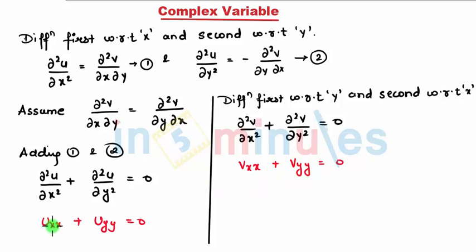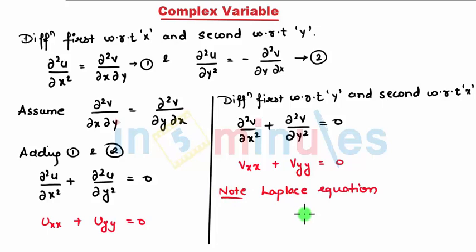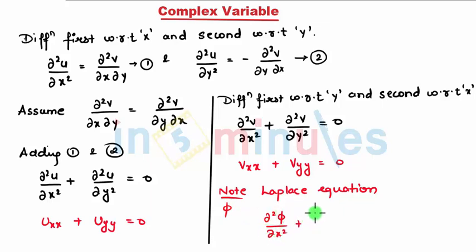Hence I get u_xx + u_yy = 0 and v_xx + v_yy = 0. Since u satisfies this, u is satisfying the Laplace equation. As a note: the Laplace equation for a function φ is ∂²φ/∂x² + ∂²φ/∂y² = 0. This is exactly the Laplace equation, and hence the proof is complete.